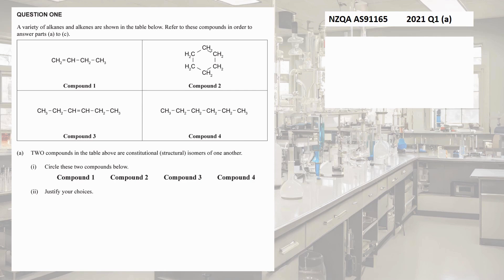The first question asks us to unpack this. They tell us there are four compounds — a variety of alkanes and alkenes. Remember: alkanes contain just carbons and hydrogens with single bonds, and alkenes contain carbons, hydrogens, and a double bond. Part A says two compounds are constitutional or structural isomers of one another, meaning they must have the same type and number of atoms but arranged in a different way.